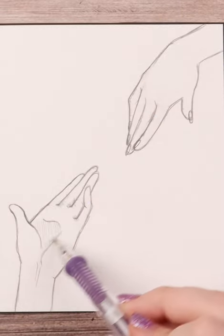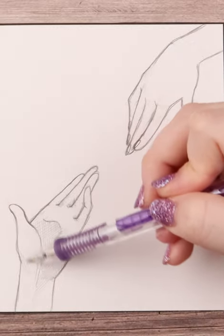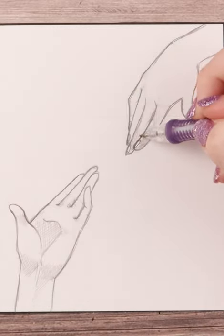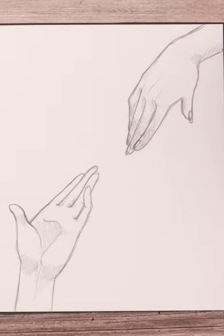Details such as sketching in the formation of the palm in the lower left hand and putting in some shading in the fingers of the upper right hand really give it all a finished look.